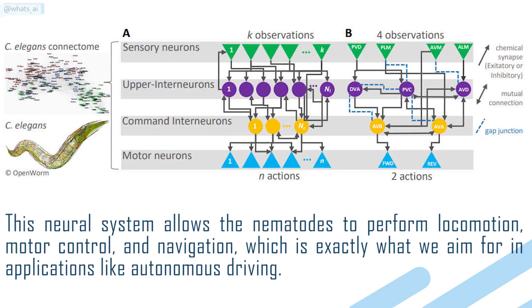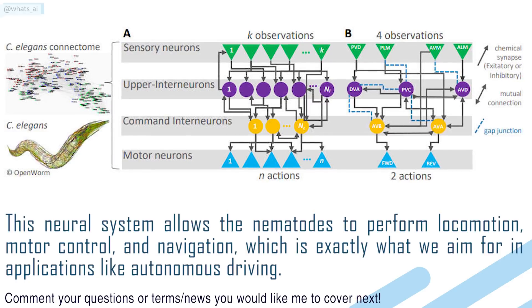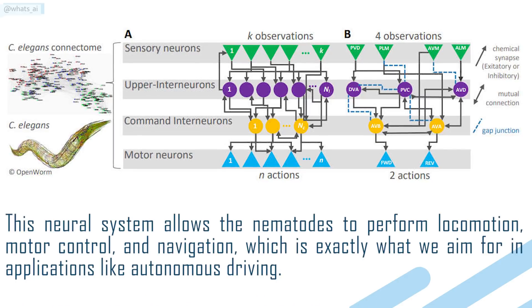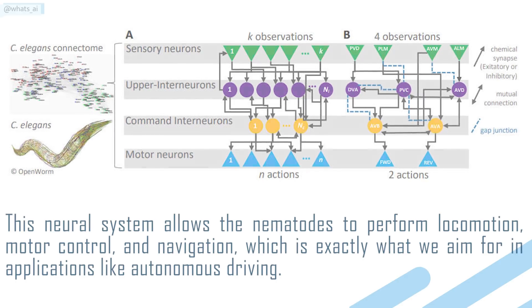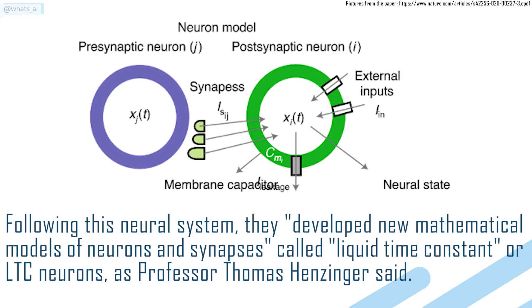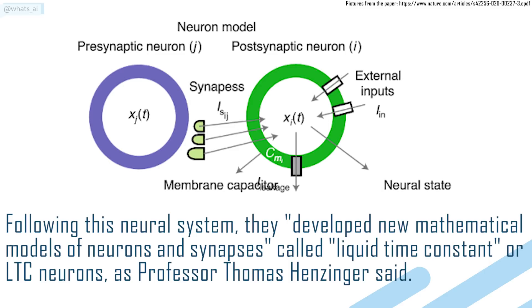This neural system allows the nematodes to perform locomotion, motor control, and navigation, which is exactly what we aim for in applications like autonomous driving. Following this neural system, they developed new mathematical models of neurons and synapses, called liquid time constant, or LTC neurons, as Professor Thomas Hanzinger said.